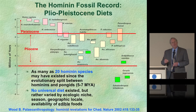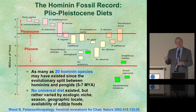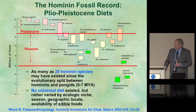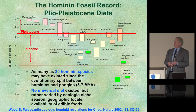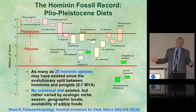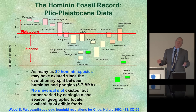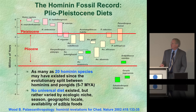We believe diet was one of the most important environmental factors that allowed us to become human. There may have been as many as 20 hominin species, and they simply did not have one diet. The so-called Paleo diet varied by geographical locale, season, and other factors.